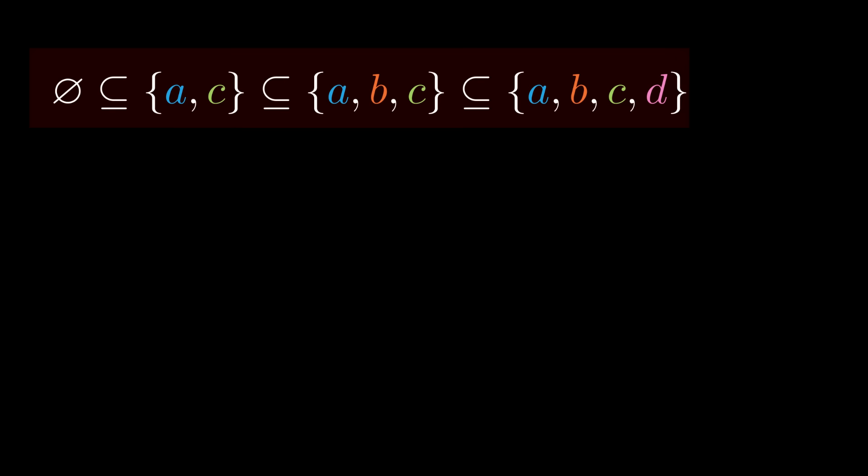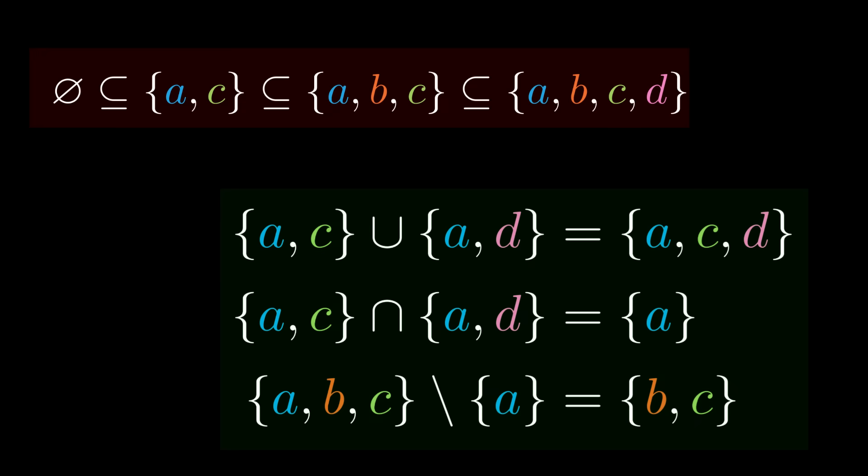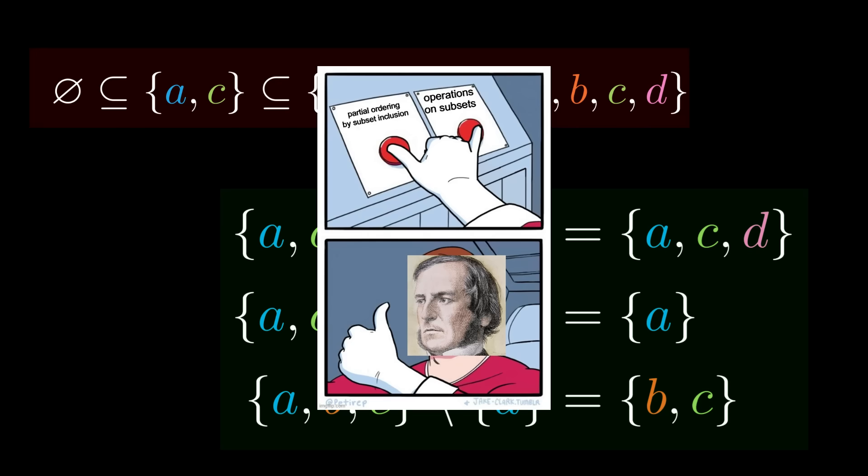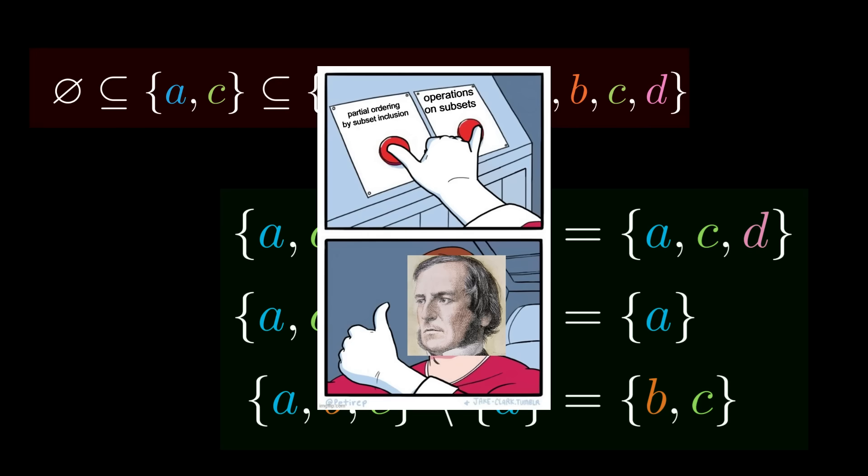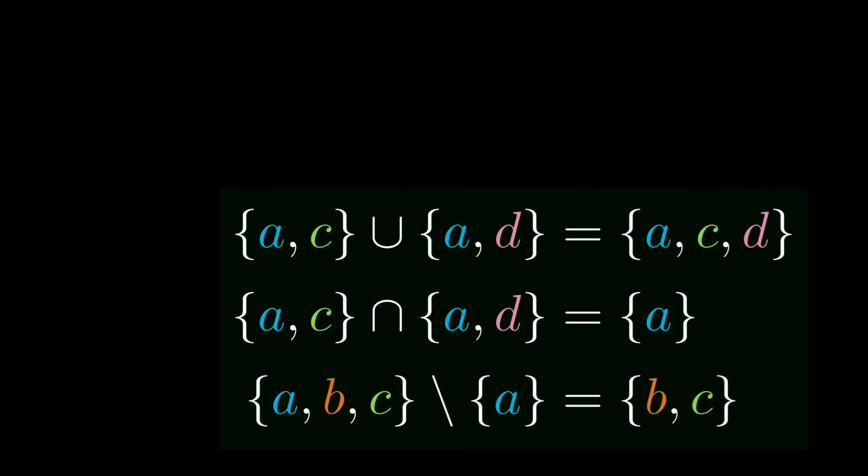So, what structure on power sets should we focus on? Well, there's two big candidates, partial ordering by inclusions or set operations. Fortunately for us, both structures imply each other in this case since power sets are very nice. Therefore, let's just focus on the set operations.